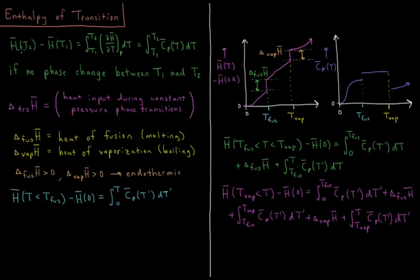The change in molar enthalpy between two temperatures is the molar enthalpy of T2 minus the molar enthalpy of T1, being a state function. It just depends on what it is at each individual temperature. So this could be the integral from T1 to T2 of dH, which would be the partial derivative of H-bar with respect to T, integrated over T at constant pressure.